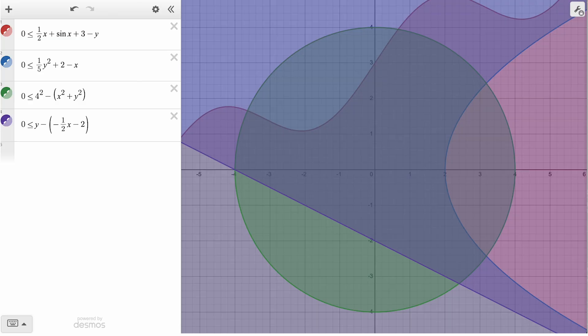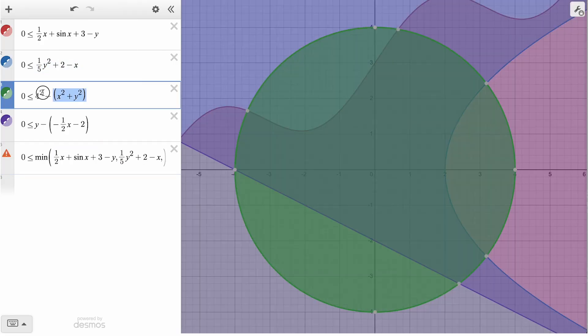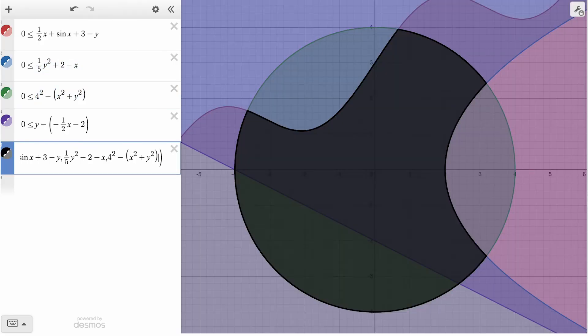To calculate this, we can use the min function, representing the minimum value of a given set of numbers or expressions. If we write 0 is less than or equal to the min of each of these four expressions, separated by commas, it will show that region where every expression of x and y is positive.